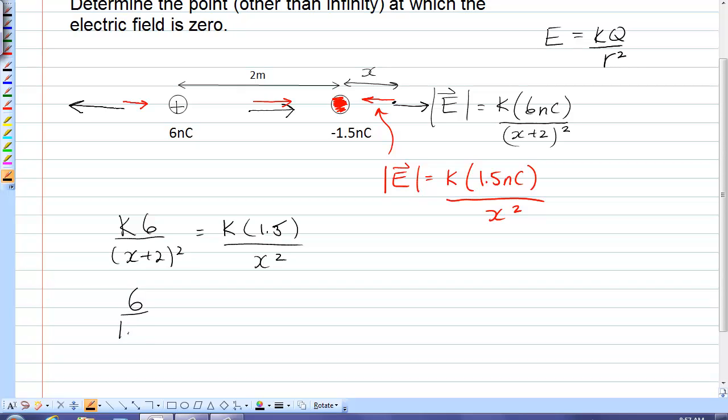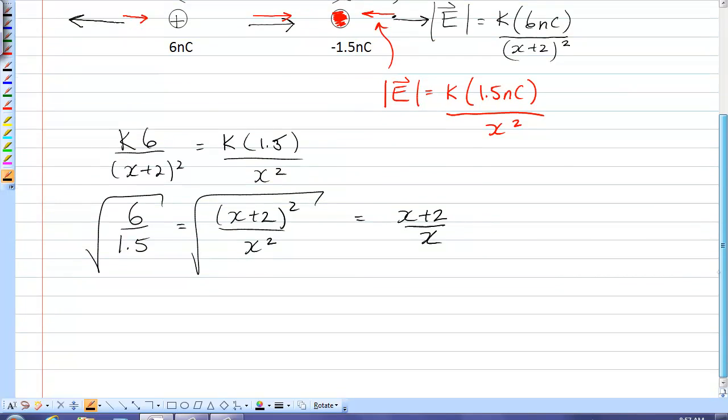I'm going to bring the 1.5 over to the left. I'm going to take the x plus 2 squared over x squared. I'm just going to square root both sides. So that on the right, I simply have x plus 2 over x. On the left, I have the square root of 4, which is just 2, and then that equals x plus 2 over x.